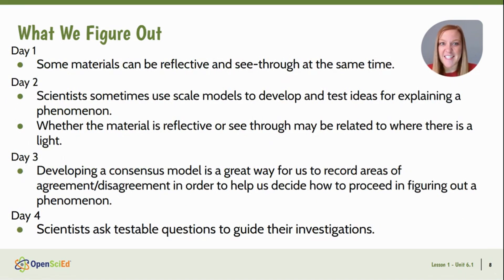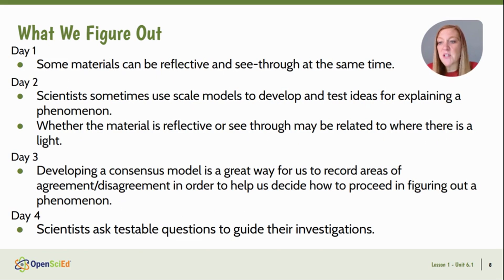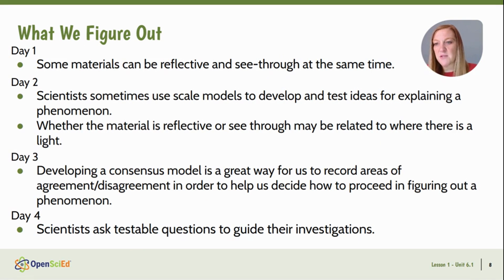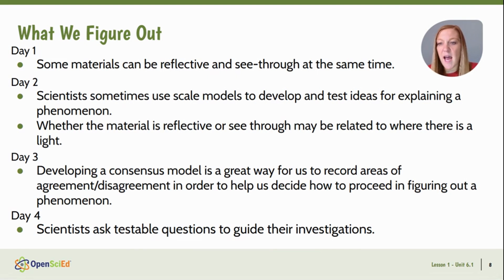On day one, students figure out that some materials can be reflective and see-through at the same time — so we're introducing this concept of a one-way mirror. On day two, scientists sometimes use scale models to develop and test ideas for explaining phenomena, and we're noticing that whether a material is reflective or see-through may be related to where light is located. On day three, developing a consensus model is a great way to record areas of agreement or disagreement in order to help us decide how to proceed. And on day four, scientists ask testable questions to guide their investigations.